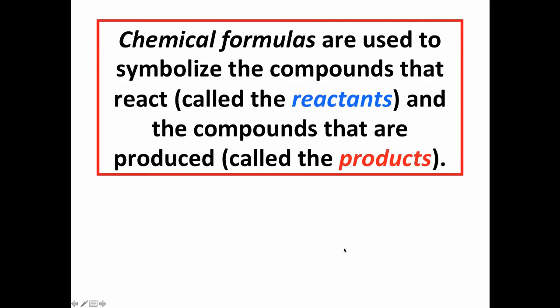A couple things to note about chemical reaction equations. We use chemical formulas to symbolize the reacting substances, the compounds that react, and those we call reactants, and then the compounds that are produced, which we call the products. So in this particular case, hydrogen and oxygen written on the left side of the reaction equation are the reactants, and water, H2O, is written on the right side and it's a product.